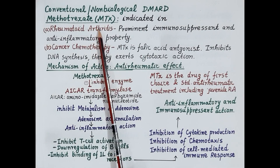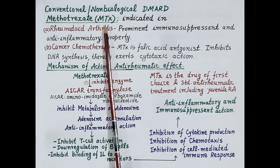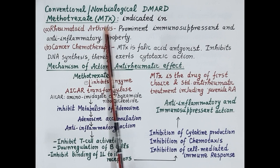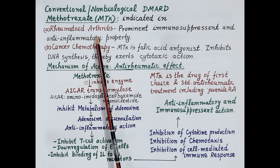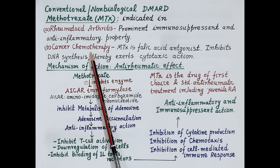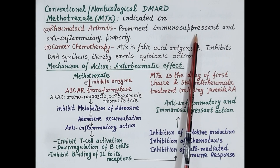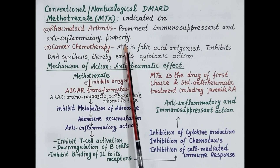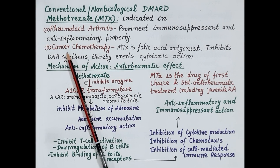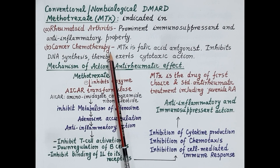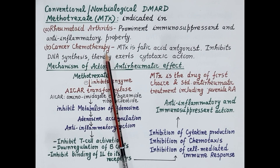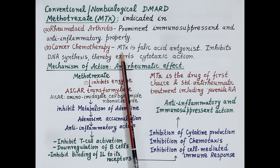Now let's understand pharmacology of methotrexate, in short MTX. Methotrexate is indicated in the treatment of rheumatoid arthritis as well as cancer. It is the DMARD of choice in rheumatoid arthritis, showing prominent immunosuppressant and anti-inflammatory properties.